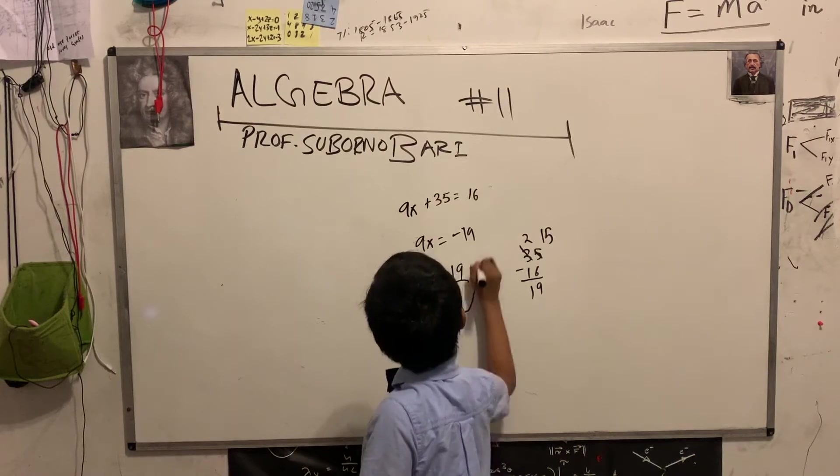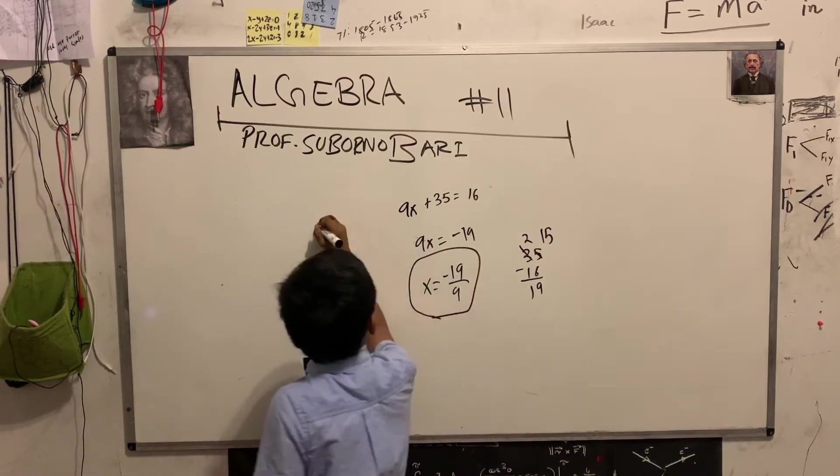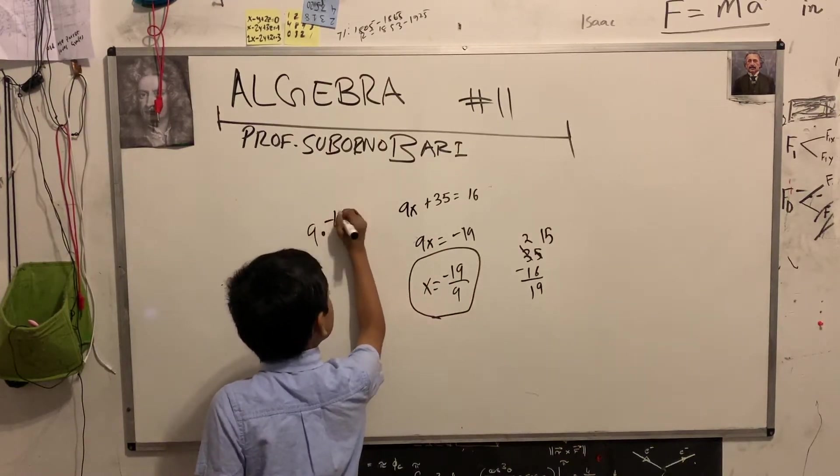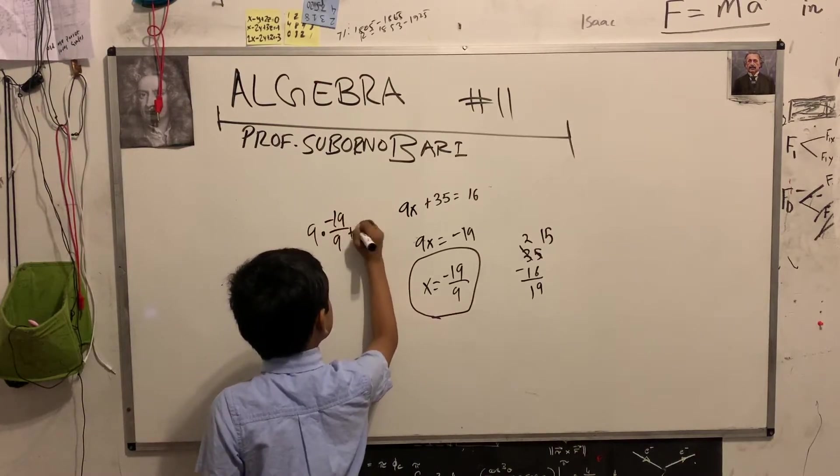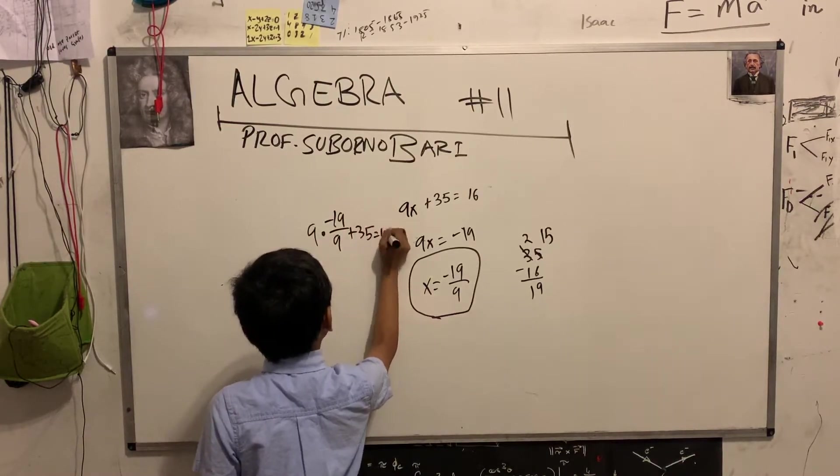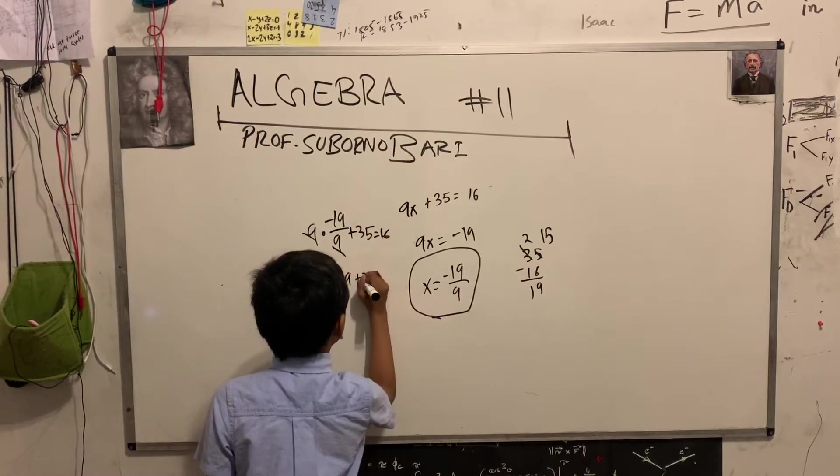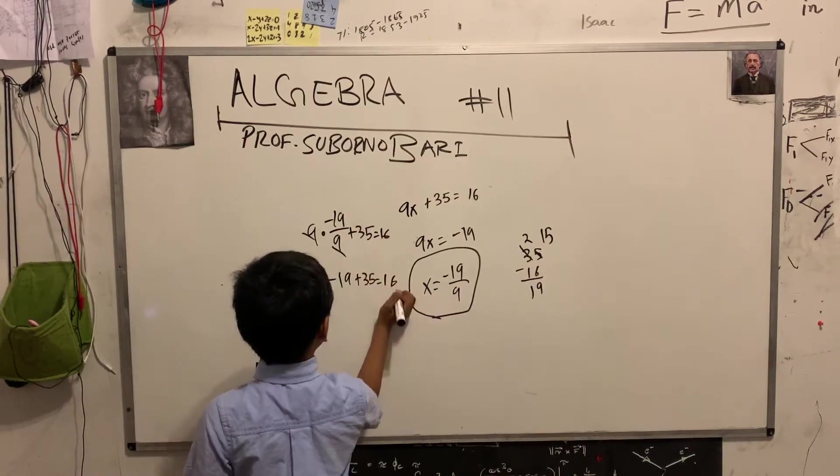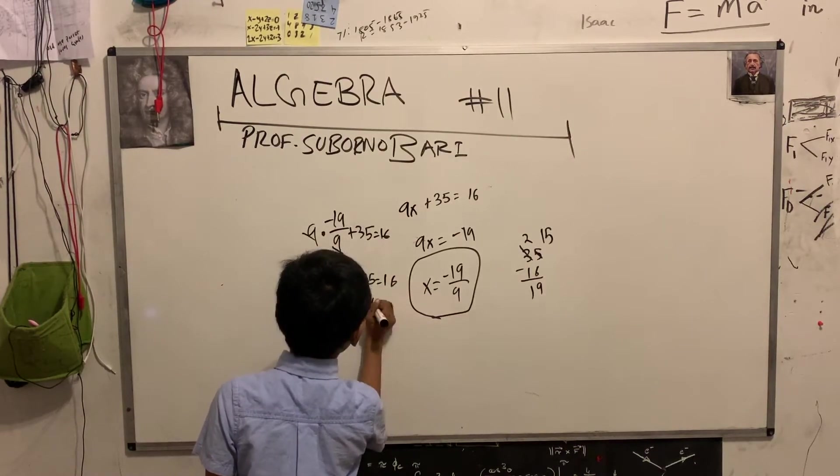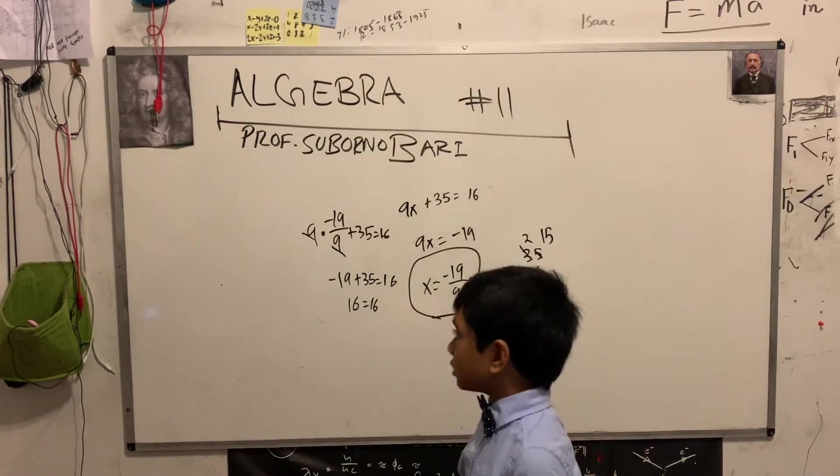So, this is the only value for which it's a true, and you can check that. Okay, plus 35 equals 16, 9, 9, cancel, minus 19, plus 35 equals 16, 16 equals 16. But, this is the only working solution.